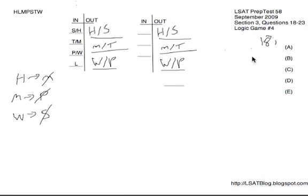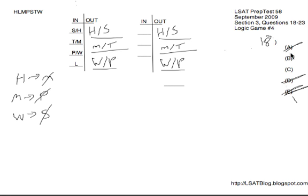Question 18 is a typical orientation question. We take one rule at a time and apply it to all five choices looking for violations. We know we must lack at least one of H/S, one of M/T, one of W/P. Choice A is gone because it has both H and S. Choice E contains both M and T, so E is eliminated. Choice D has both W and P, so D is gone. We're down to B and C. Choice B has both H and M, which conflict, therefore B is gone — leaving C for number 18.